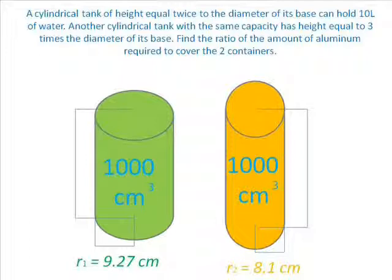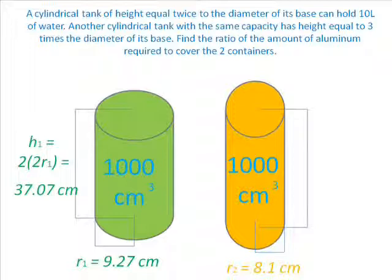Also, by substituting the given radius into the answers formed, we then follow with H1 that is equal to 37.07 cm and H2 that is equal to 48.57 cm.